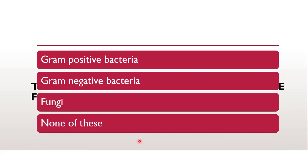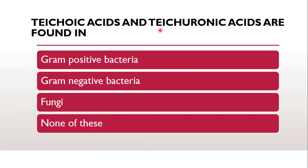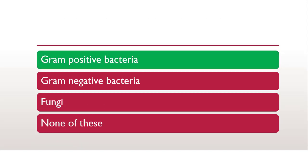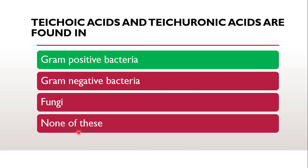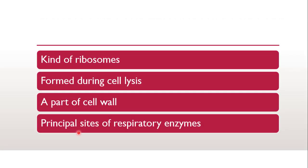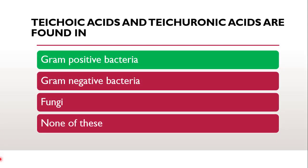Next question: teichoic acids and teichuronic acids are found in — whether it is gram-positive bacteria, gram-negative bacteria, fungi, or none of these. The correct answer is gram-positive bacteria. Teichuronic acid is located on the cell surface and is covalently linked to the peptidoglycan layer. Gram-positive bacteria contain teichoic acid, and teichuronic acid also plays a role in protecting the microbes and is responsible for interaction with the host cell.